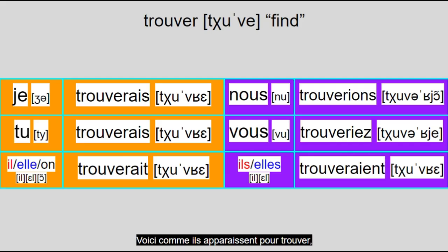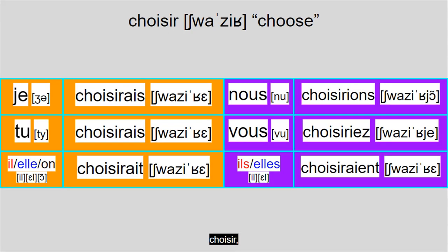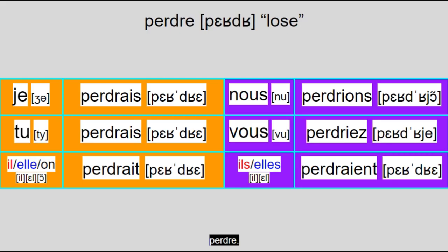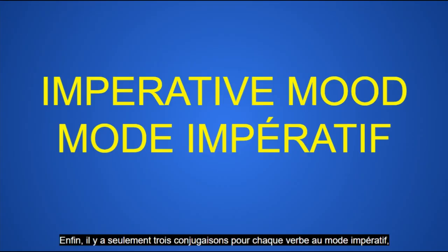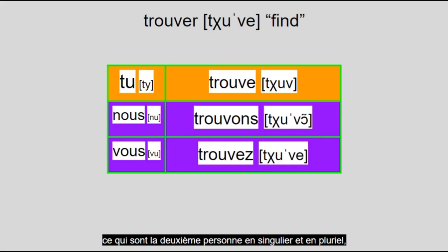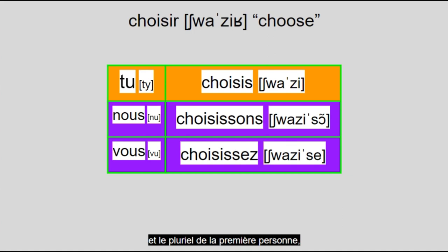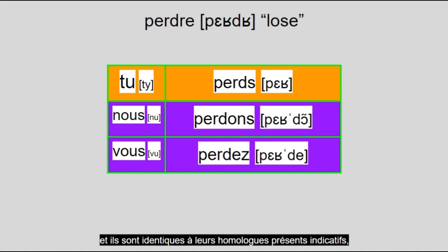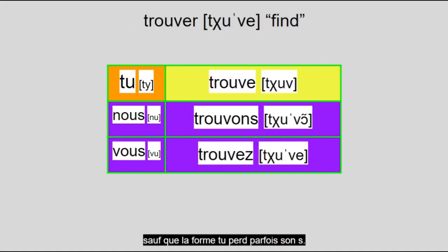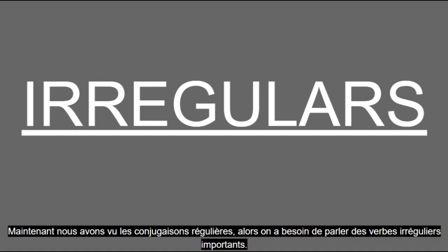Here's what the conditional looks like for trouver, choisir, perdre. Finally, there are only three conjugations for each verb in the imperative mood: those being second-person singular and plural, and first-person plural — the 'let's' form — and they're identical to their indicative present counterparts, except that the tu form sometimes loses its final S.